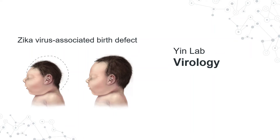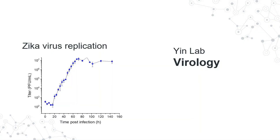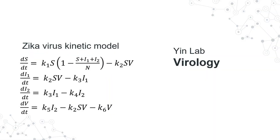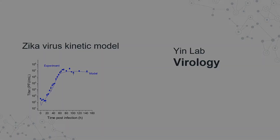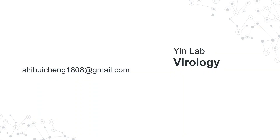Zika virus may break out again elsewhere, and we need vaccines against it, but they are still in clinical trials. We measured the growth of the Zika virus, showing that it can replicate in cell culture a thousand times in about 19 hours. We are also building mathematical models to maximize virus growth for vaccine production. If you have questions about my project or want to know more about the INLAB, please feel free to contact me at this email address.